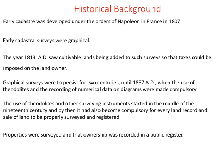An early cadastre was developed under the orders of Napoleon in France. Evidence from 1799 AD shows that Napoleon Bonaparte ordered his men to record land by providing land use type, ownership, and parcel unique identifiers. These were done on control grid sheets using triangulation methods to establish control points. This was one of the modern approaches, followed by other European countries as well. By 1813 AD, cultivable land was added to such surveys so that tax could be imposed on landowners.